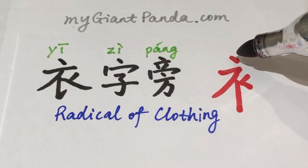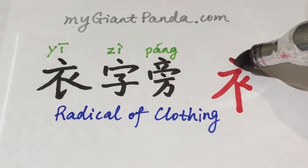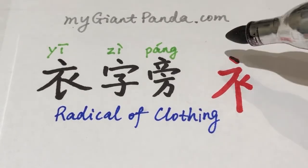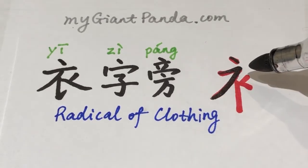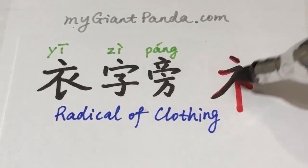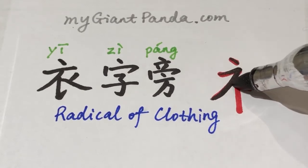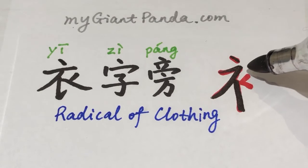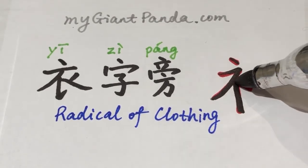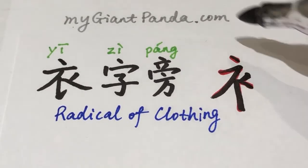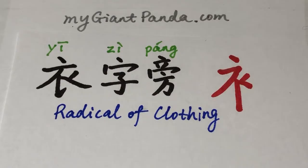The radical of clothing looks like ancient Chinese clothes. Chinese characters with the radical of clothing are usually related to clothing. 当然也有一些例外，大家平时在学习当中也要注意留意。